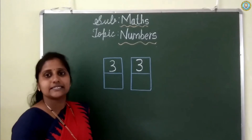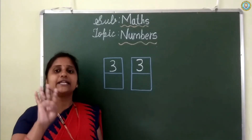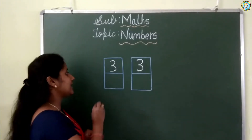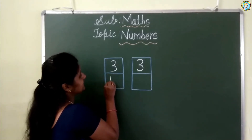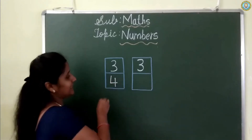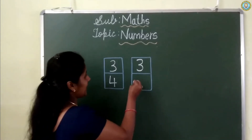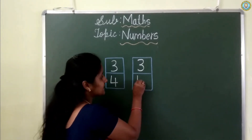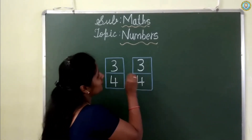Next, number 4. Now I will teach you how to write number 4. Come on children, look carefully. Standing line, sleeping line, and standing line to make the number 4. Repeat once again: standing line, sleeping line, to make the number 4.